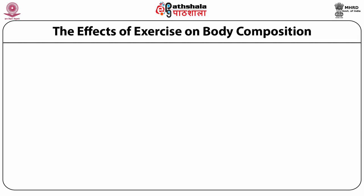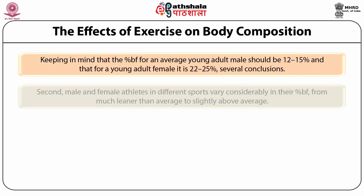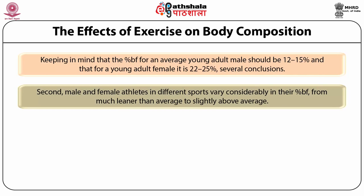Let's study the effect of exercise on body composition. Keeping in mind that the percentage of fat for an average young adult male should be 12 to 15%, and for a young adult female it should be 22 to 25%, several conclusions can be made. First, even among athletes, the male-female differences in percentage body fat are maintained. Second, male and female athletes in different sports vary considerably in their percentage body fat — from much leaner than average to slightly above average. Third, the percentage body fat values appear to have a direct relationship to the demands of the sport.